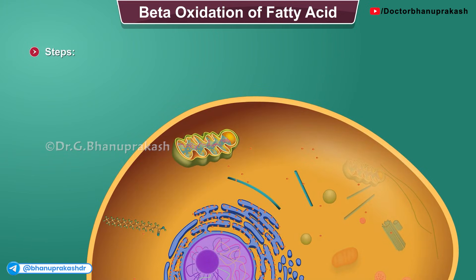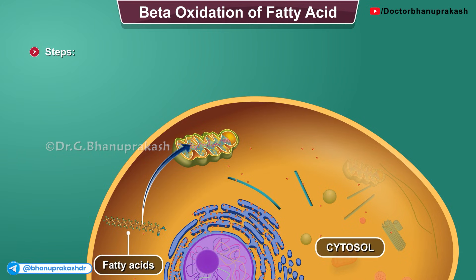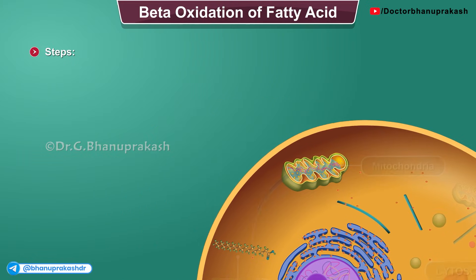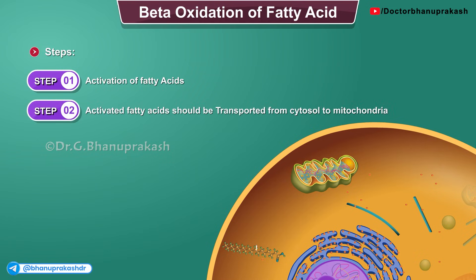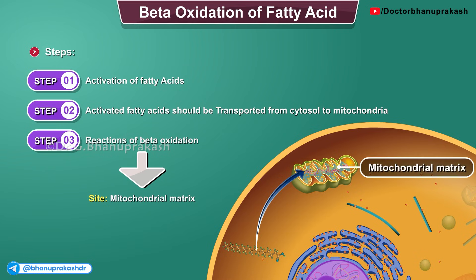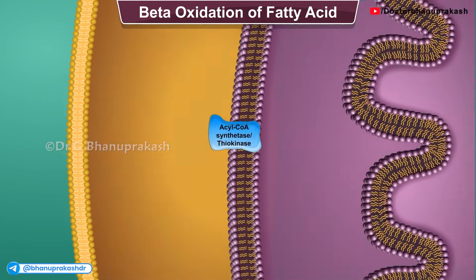Now let us take a look at the steps of beta oxidation of fatty acids. Fatty acids present in the cytosol need to be translocated to the mitochondrial matrix for beta oxidation to occur. First, fatty acids need to be activated. The initial step is activation of fatty acids. Then, activated fatty acids should be transported from the cytosol to the mitochondria. The final process is the reactions of beta oxidation, which take place in the mitochondrial matrix.